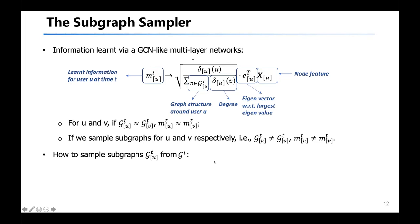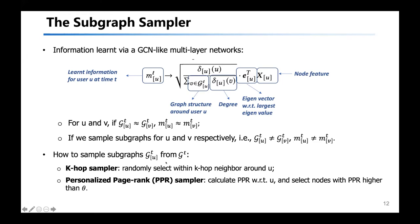In this paper, we explore two straightforward subgraph samplers. The first is a k-hop sampler, where we randomly sample a bunch of nodes within the k-hop neighborhood centered around each node. The second type is the personalized page rank (PPR) sampler, where we calculate the PPR value with respect to each node and preserve only the nodes with a higher PPR value than a threshold, indicating higher-relevance nodes around each node.